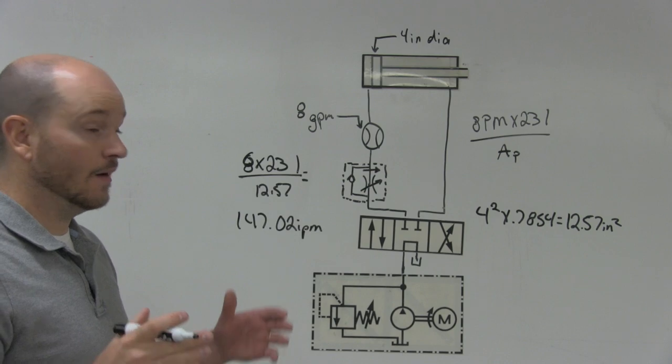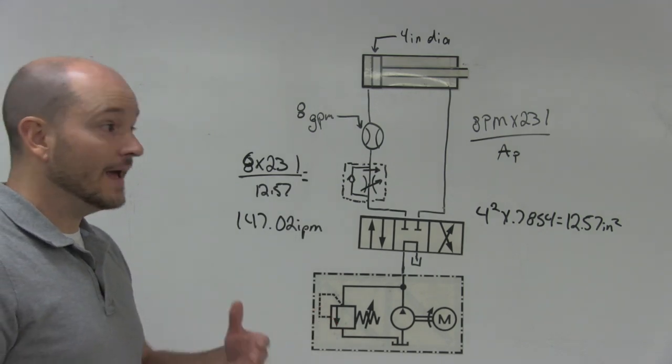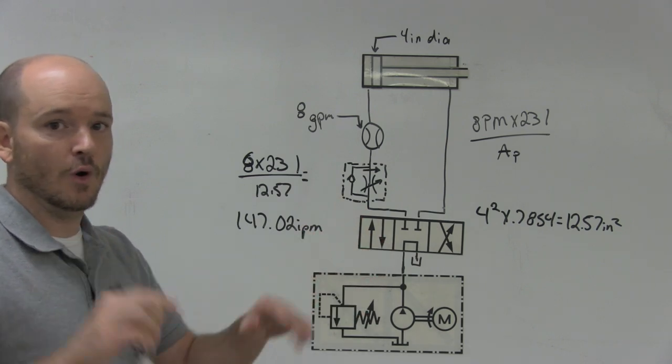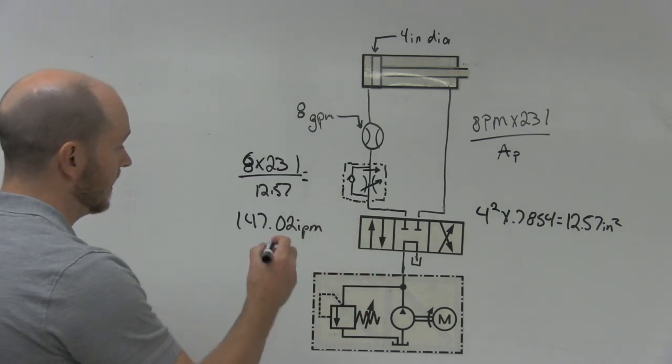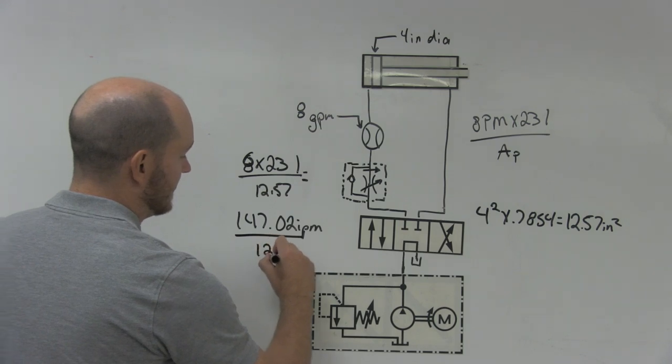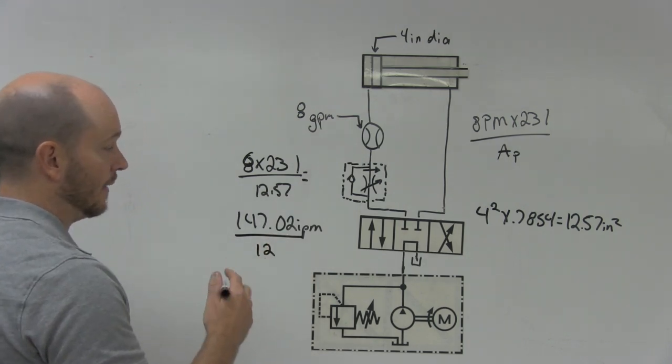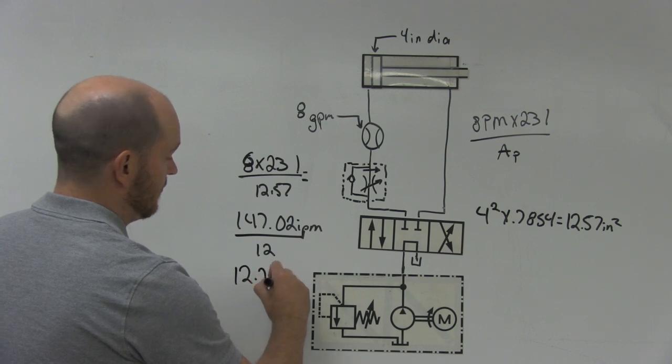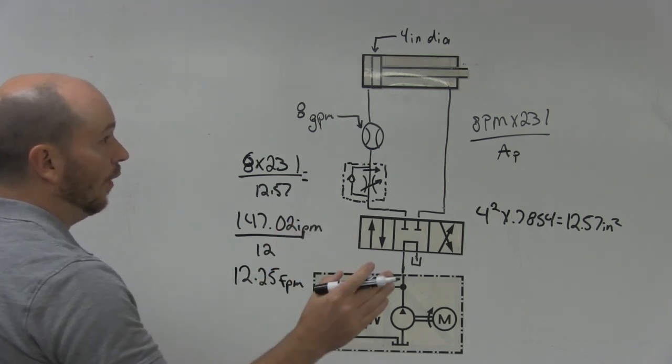Now, you may be saying, what if I need this in feet per minute? It's hard to imagine what 147 inches are. I can do this a little bit better in feet. No problem. There's two ways to do that. One, you could divide this answer by 12, and that would come up with 12.25 feet per minute.